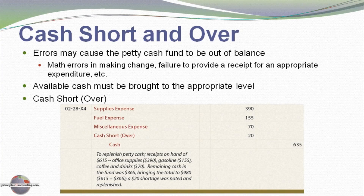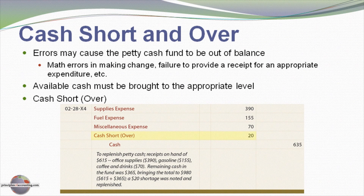Here's a journal entry example. In this case, I actually needed to record a $635 credit to cash. I recorded the same $615 of expenses but just can't explain the $20 shortage. So I'm debiting another expense account — cash short — to account for it. If it had been a cash overage, we would have had a credit there instead.